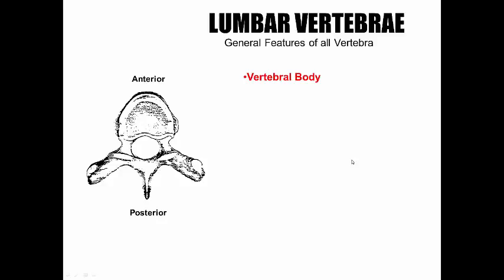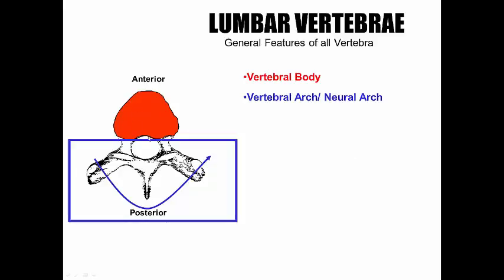Every vertebra has its vertebral body, seen here in red. The whole posterior element is called the vertebral arch or the neural arch. If this were turned upside down, the spinal cord goes through this foramen, and these features create an arch or a bridge over the spinal column.